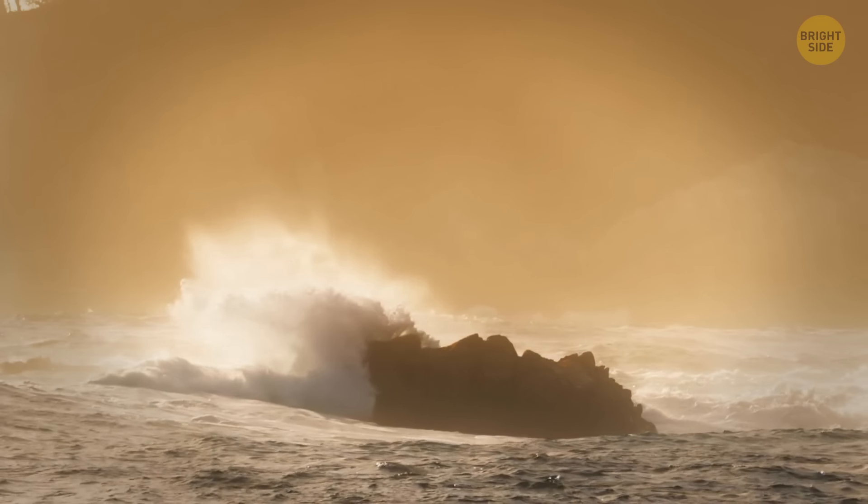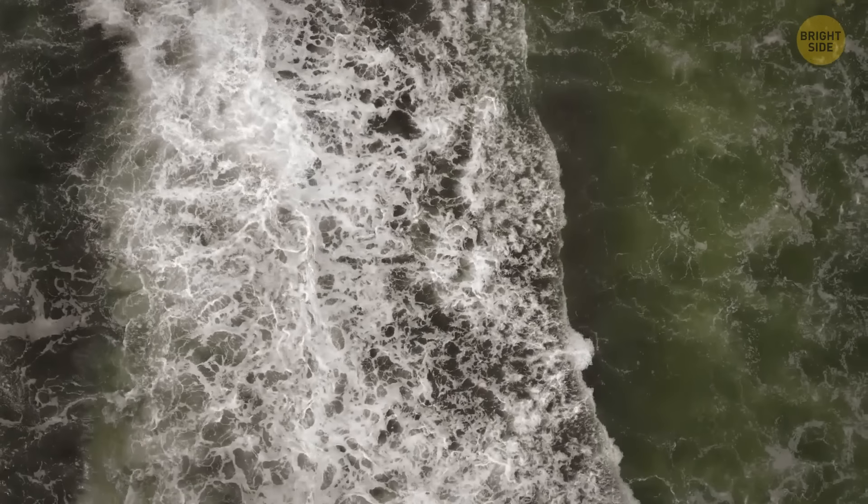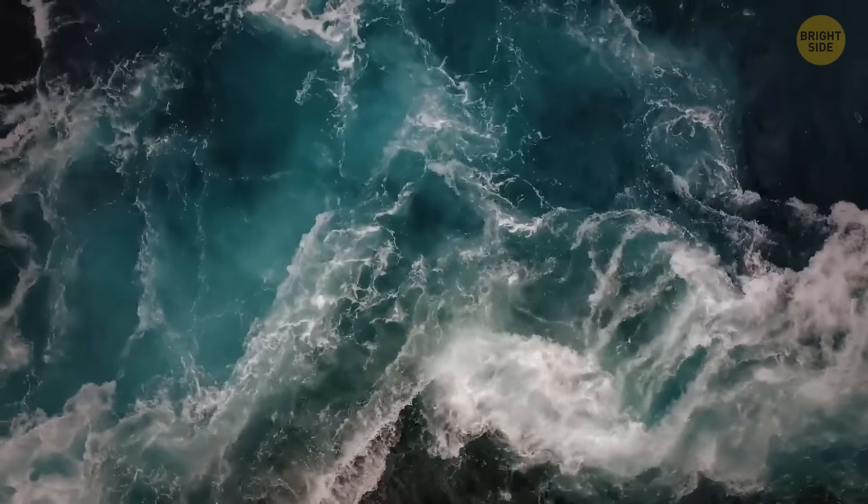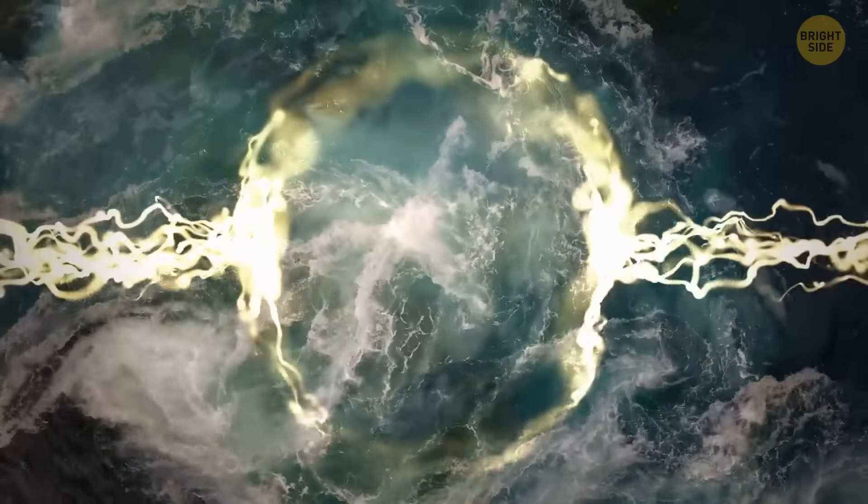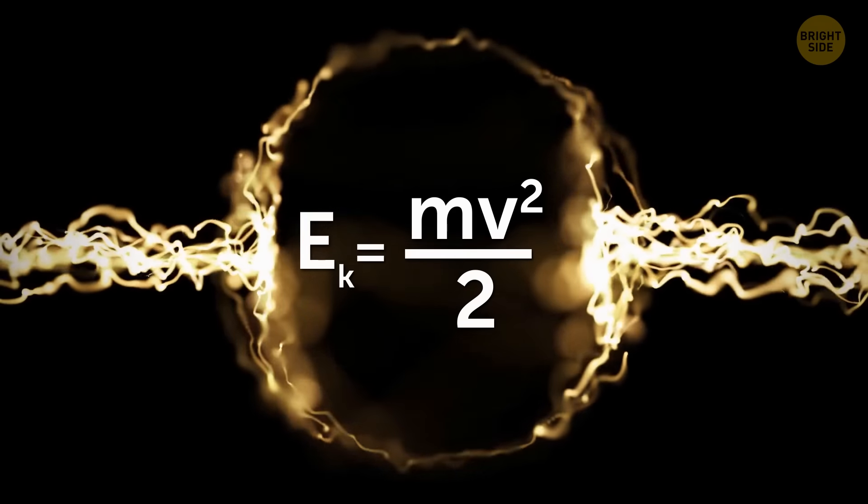Another theory says that eddies create rogue waves. These eddies form along the edges of the ocean currents, and then they drift separately for a long time, increasing kinetic energy and forming eddy fields. The kinetic energy contained in these fields can charge the waves and increase their strength.